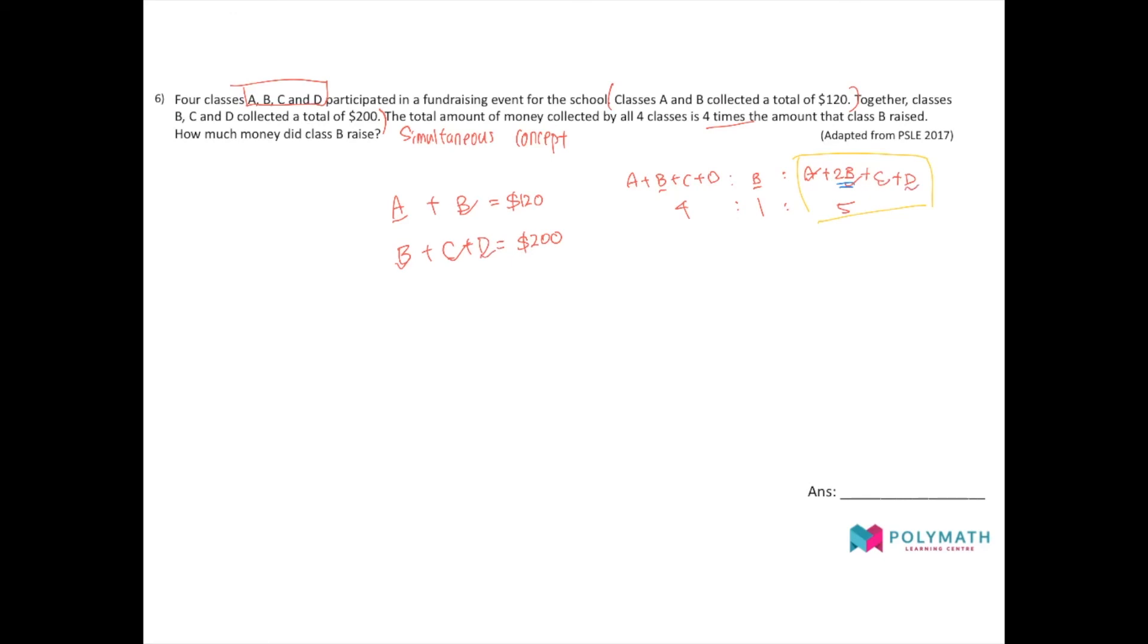So actually, I can sum them together. Add them together. A plus 2B plus C plus D is actually equal to 120 plus 200, which is $320.